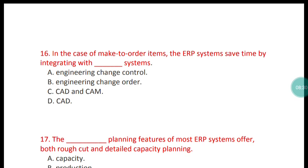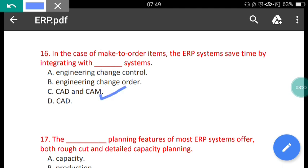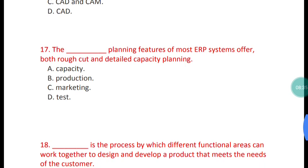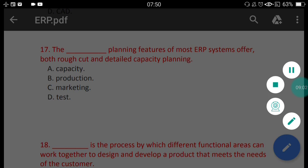Question 17: The planning feature of most ERP systems offers both rough cut and detailed capacity planning. What is this planning feature called? The correct answer is option A — the capacity planning feature of most ERP systems offers both rough cut and detailed capacity planning.